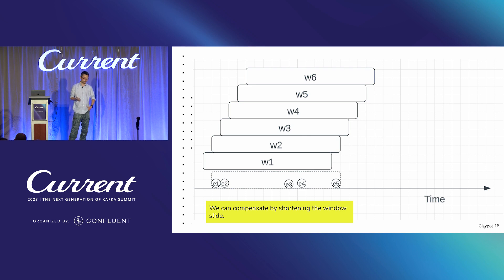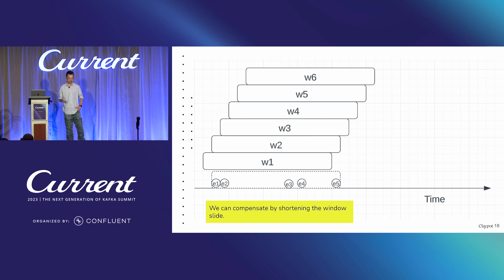What can we do? We can compensate by shortening the window slide. Since on average there are about 10 events per credit card in a two-hour window, we can shorten the slide to compensate and get better accuracy results. This is very important for this particular use case.